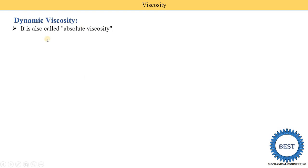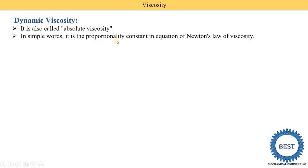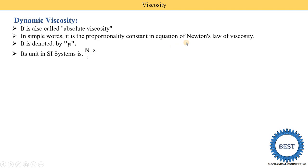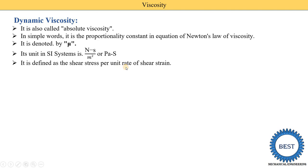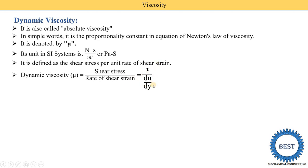The next term is dynamic viscosity, also called absolute viscosity. In simple terms, it is the proportionality constant mu in Newton's law of viscosity. It is denoted by mu, and its SI unit is Newton·second per meter squared. Dynamic viscosity is defined as shear stress per unit rate of shear strain — that is, mu equals tau divided by (du/dy).